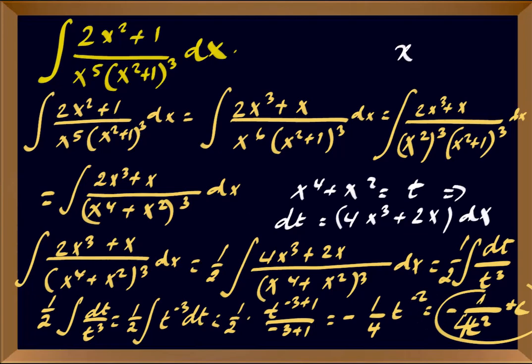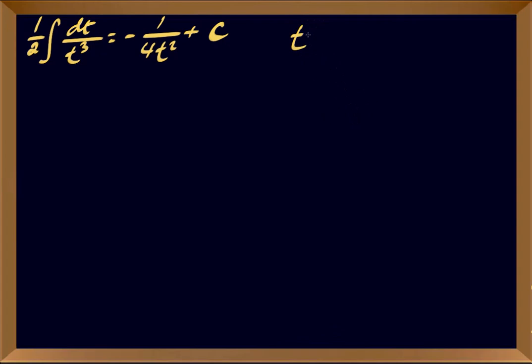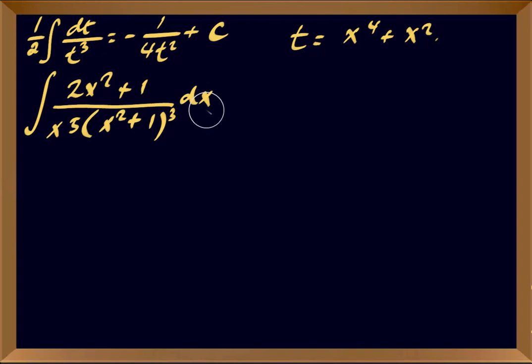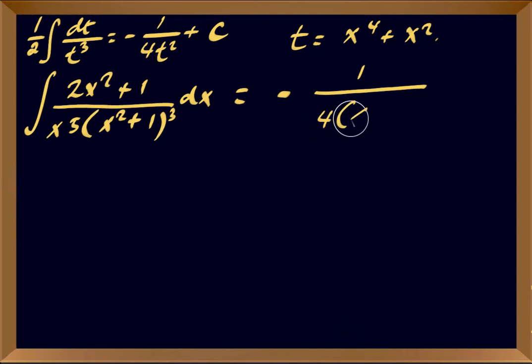Substituting back t = x⁴ + x², the original integral of (2x² + 1) over x⁵(x² + 1)³ dx is simply equal to −1 over 4(x⁴ + x²)² plus a constant. That's the answer — we made this one very short.